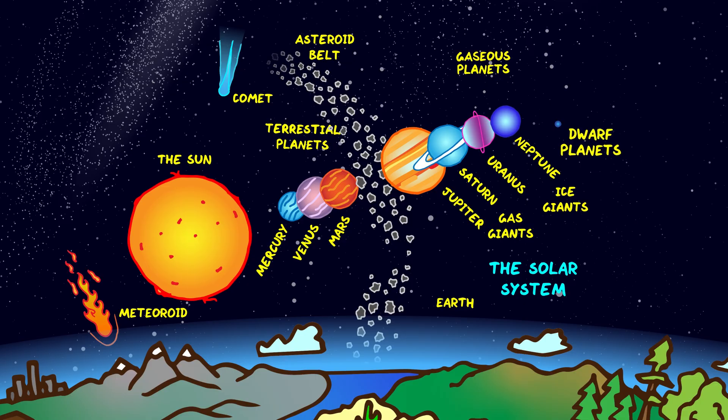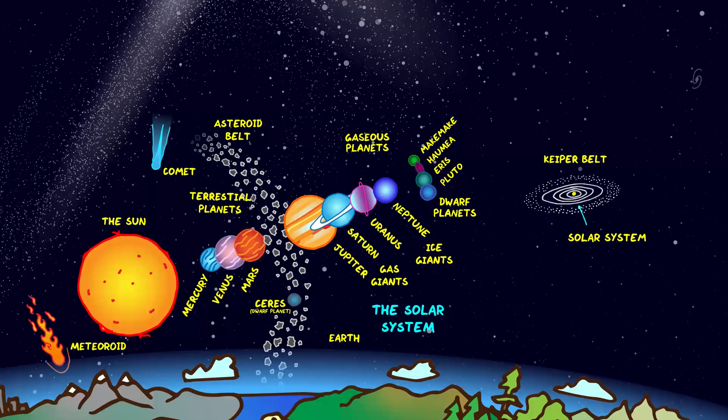We also have dwarf planets which haven't managed to clear their orbits of other objects like Ceres in the asteroid belt and Pluto and others in the Kuiper belt which is a region beyond Neptune similar to the asteroid belt but far wider containing many small bodies made of rock and metal.